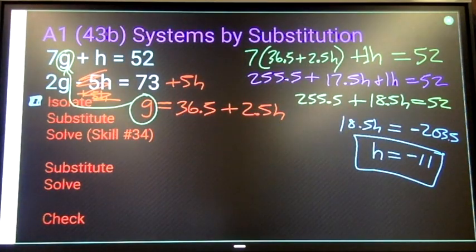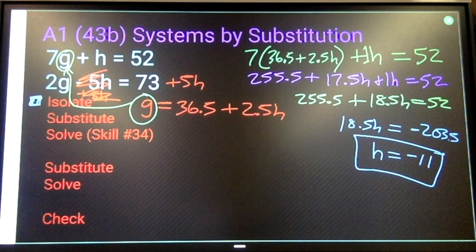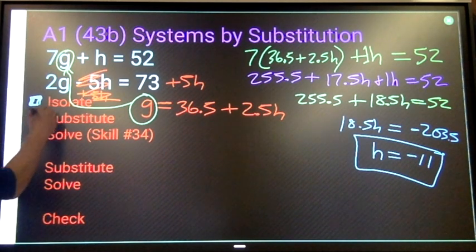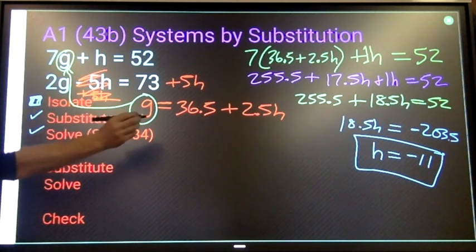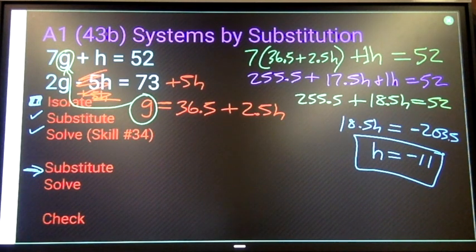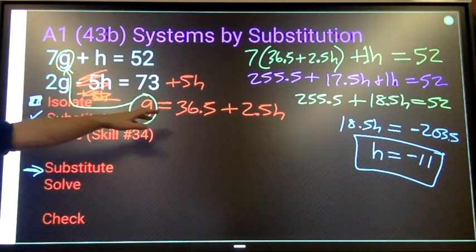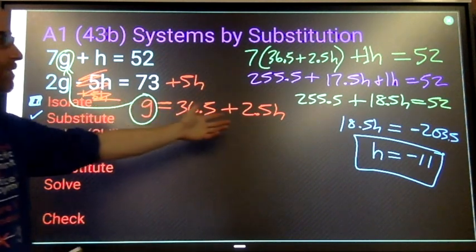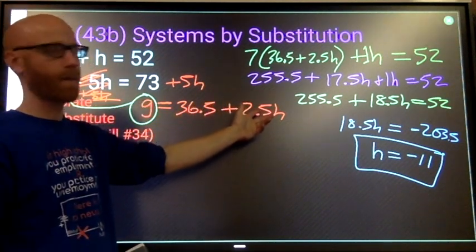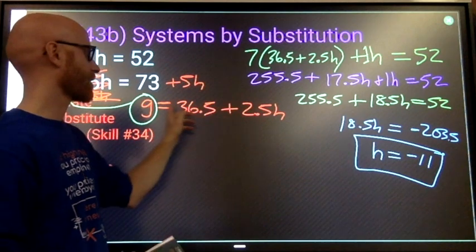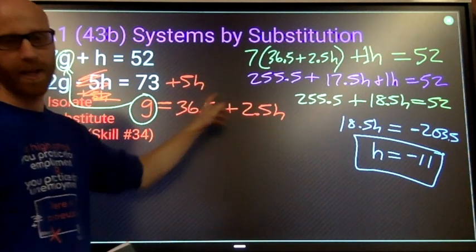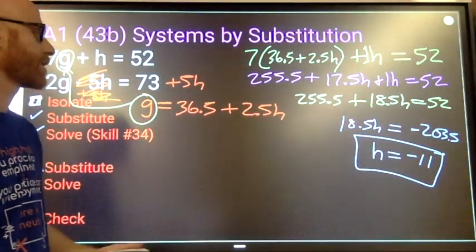Take that. We've substituted, we've solved. Take that, substitute it back into the equation I didn't use yet. So I could either go back to this original, if I don't want to deal with those decimals, or just come in here. This, actually, even though it looks like decimals are tough to deal with, is pretty simple because when I put h, when I put negative 11 in here, we'll just get an answer.